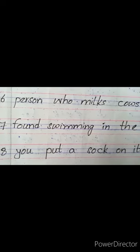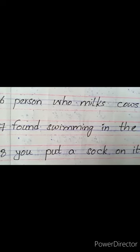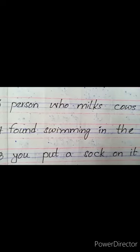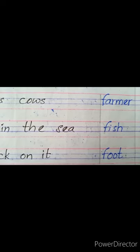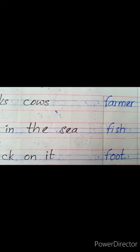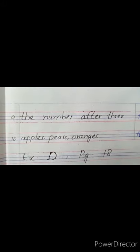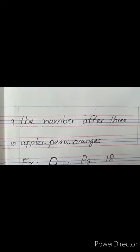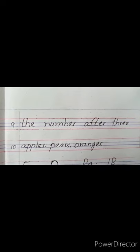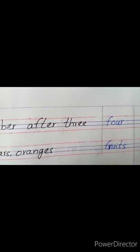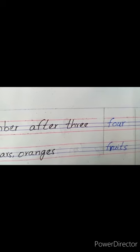Eighth one is 'you put a sock on it'. Sock means جراب — آپ اس کو پہناتے ہو تو وہ کون سی چیز ہے جس کو آپ socks پہناتے ہو — so this is 'foot'. آپ کا پیر — F سے start ہوتا ہے. Ninth one is 'the number after three' — three کے بعد جو number آتا ہے جو F سے start ہوتا ہے — so it is 'four' — F-O-U-R.